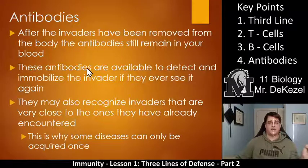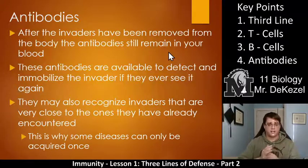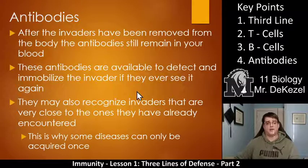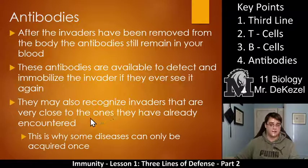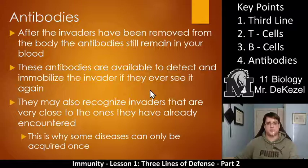After the invaders have been removed from your body, the antibodies still remain in your blood. Some remain for a long time, some for only a short time, some are gone almost immediately, and some last forever. These antibodies are available to detect and immobilize the invader if they ever see it again — that's why sometimes you can have a better immune response to a foreign invader you've seen before. They may also recognize invaders that are very close to ones already encountered, which is why some diseases can only be acquired once.